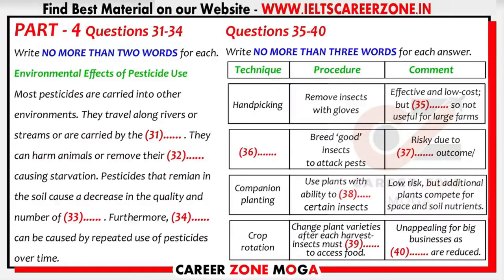A safer option is companion planting, where certain plants are grown together. Garlic, for example, fends off spider mites and aphids, and basil drives away the tomato hornworm, making it a good companion for tomatoes. Some varieties of plant can repel specific breeds of insects, so planting them alongside more vulnerable vegetables will discourage the insects from coming near. Of course, all these extra plants begin fighting for space and competing with the protected plants for access to water and nutrients in the soil.